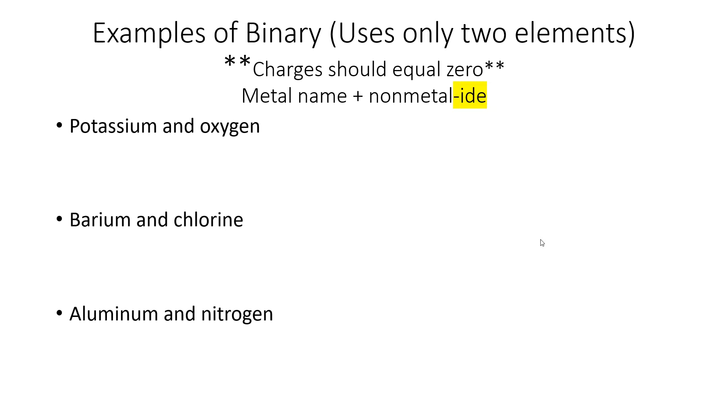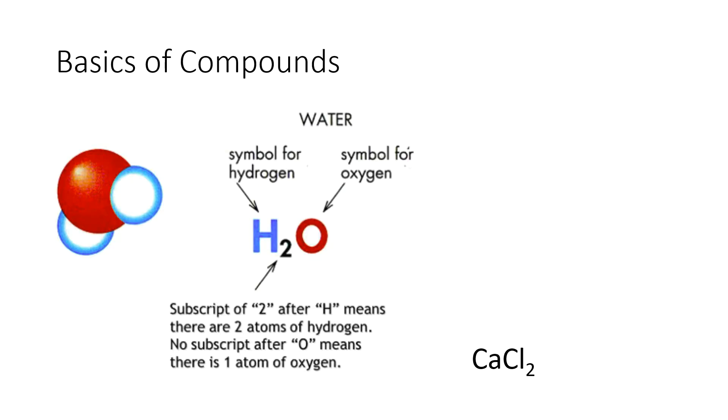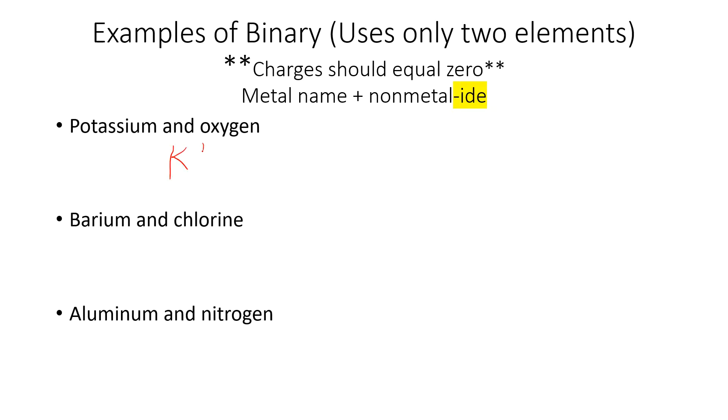All right, so here are some examples of binary, only using two elements - potassium and oxygen. If we go back to our charge thing, potassium has a plus one charge, and oxygen has a minus two charge. And what we want is that the charges should equal zero. Currently, plus one and minus two equals negative one, so we need more plus ones. We're going to need another potassium. Plus one, plus one, minus two - now that equals zero, so that's good. So it's K2O. That would be the formula for potassium and oxygen. The name is the metal name plus the nonmetal with an -ide ending, so the metal's name is potassium, and the nonmetal's name is oxide.